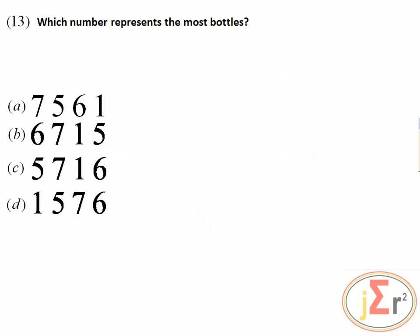Which number represents the most bottles? This is a simple question asking which number is the largest. Option A is the answer. How do we know? Because the number starts with 7, the others start with 6, 5, and 1.